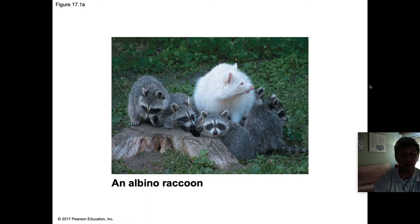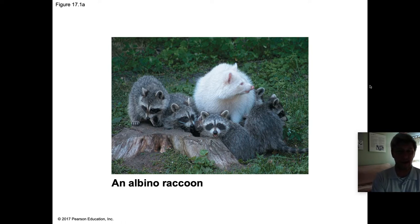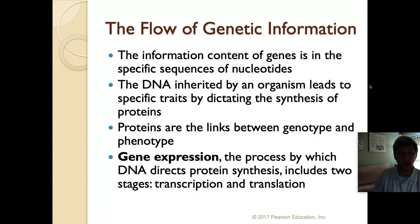The example shown here is that of an albino raccoon — it might actually be the mother, as it looks bigger than the rest. The genes that make the albino raccoon albino were passed on from its parents. In this case it's definitely a recessive trait, and that is what we call gene expression.